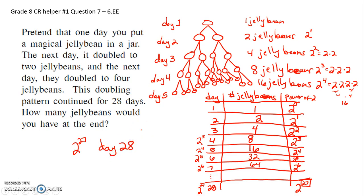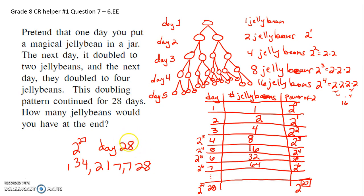So I'm going to pick up my handy-dandy calculator and do two to the twenty-seventh power. The result is: one, three, four, two, one, seven, seven, two, eight — holy shimole! So on the twenty-eighth day, if you just let these jelly beans double, you'll have 134,217,728 jelly beans to eat.